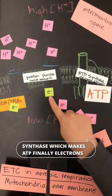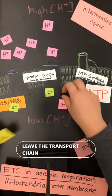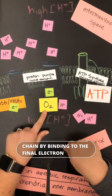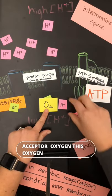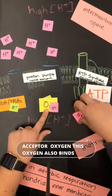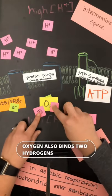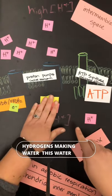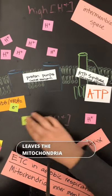Finally, the electrons leave the transport chain by binding to the final electron acceptor, oxygen. This oxygen also binds to hydrogens, making water. And this water leaves the mitochondria.